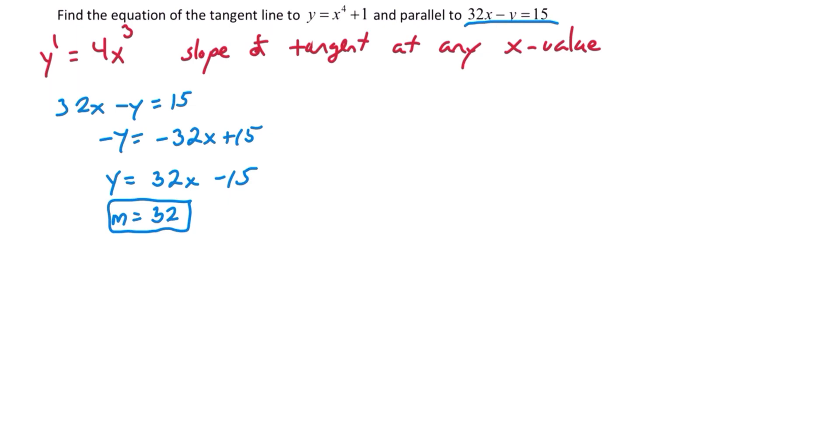So we're going to be focusing on a line that has a slope of 32. What else do we know about slope? We said earlier that the derivative is all about slope of the tangent line. So let's force 32 to be equal to 4x cubed. Since y prime is the slope of the tangent line and we want the slope to be parallel to this other line that has a slope of 32.